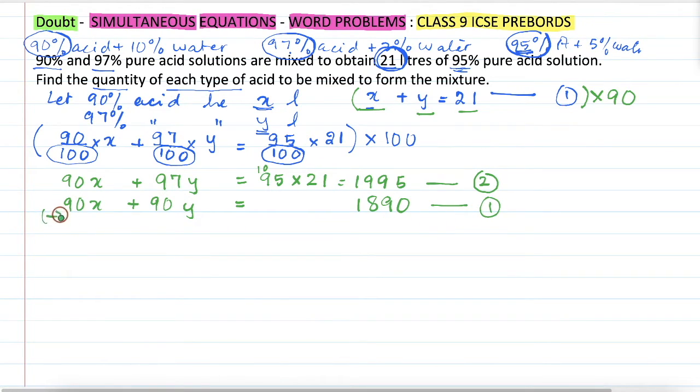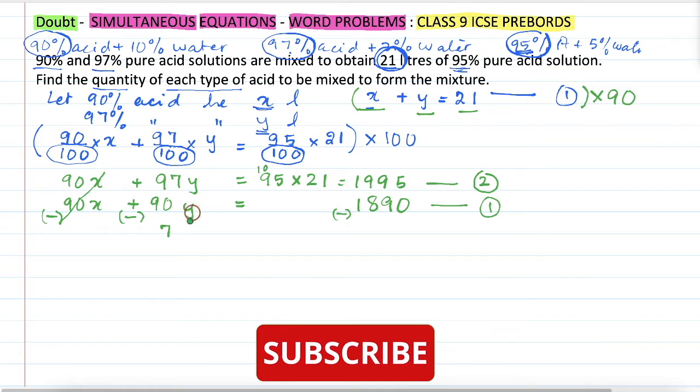Now, let us eliminate x by changing the signs everywhere. That will have this getting cancelled. 97 minus 90 is 7. So it will be 7y equal to, here it will be 105.